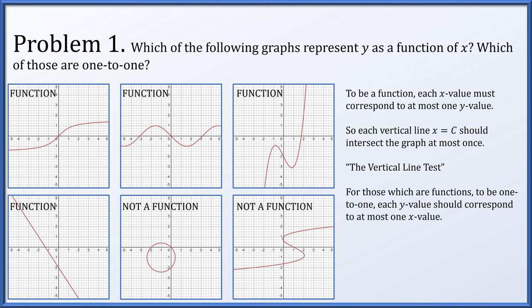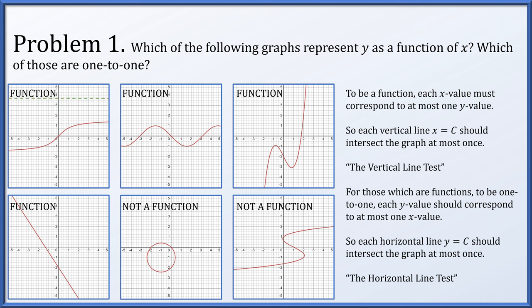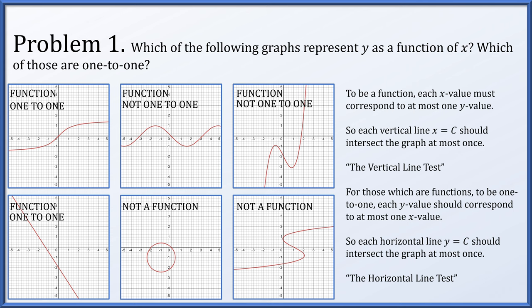Now of those which are functions, to be one to one, y values should correspond to at most one x value. So we take horizontal lines and scan them across the graph asking does it intersect at most once — and we only do this for graphs known to be functions. Starting in the upper left, moving a horizontal line from bottom to top, it only ever intersects once at a time, so it's one to one. The next function: a horizontal line can get multiple intersections, so it is not one to one. The third function also gets multiple intersections — not one to one. The bottom-left graph: horizontal lines intersect at most once, so this is a one-to-one function. We do not need to check the other two because they weren't functions to begin with.